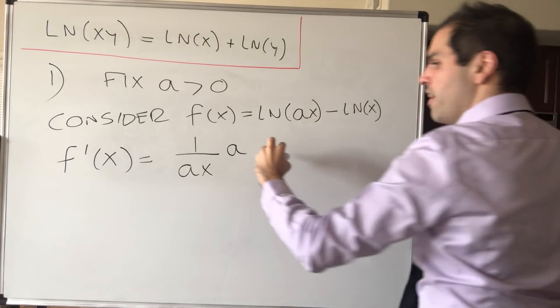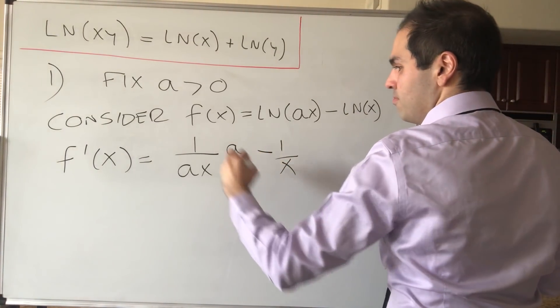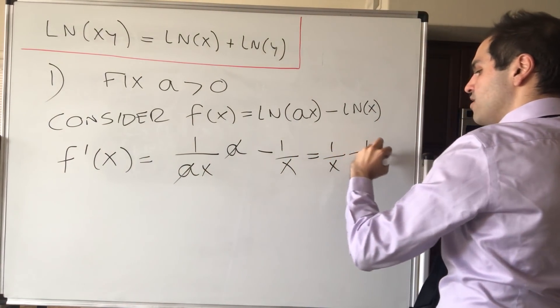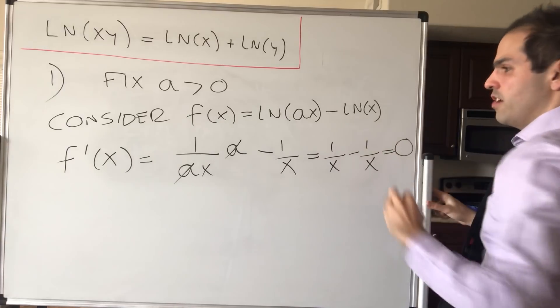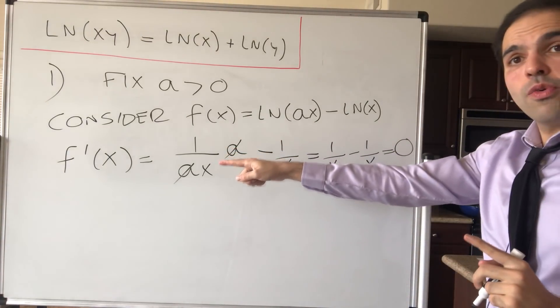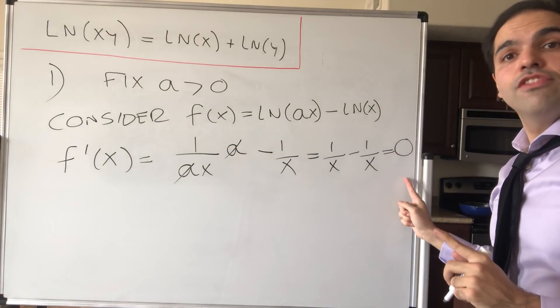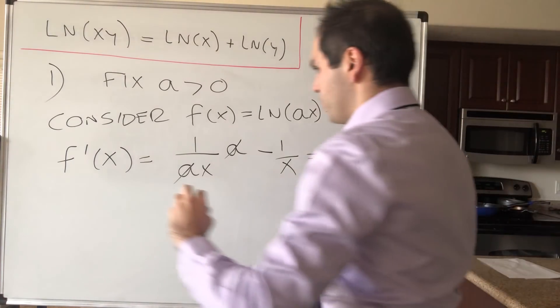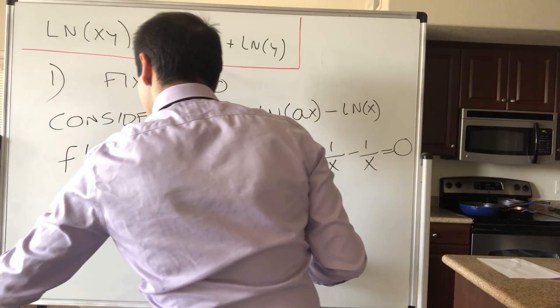And the derivative of ln is 1 over x. So then the a cancels out and we get 1 over x minus 1 over x, which is 0. In other words, the derivative of f equals 0, so this just means that f is constant. So f is constant.